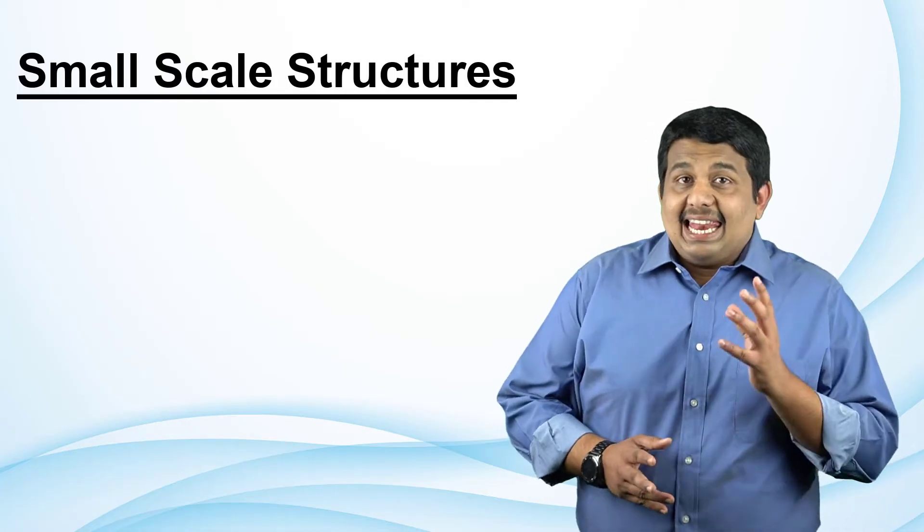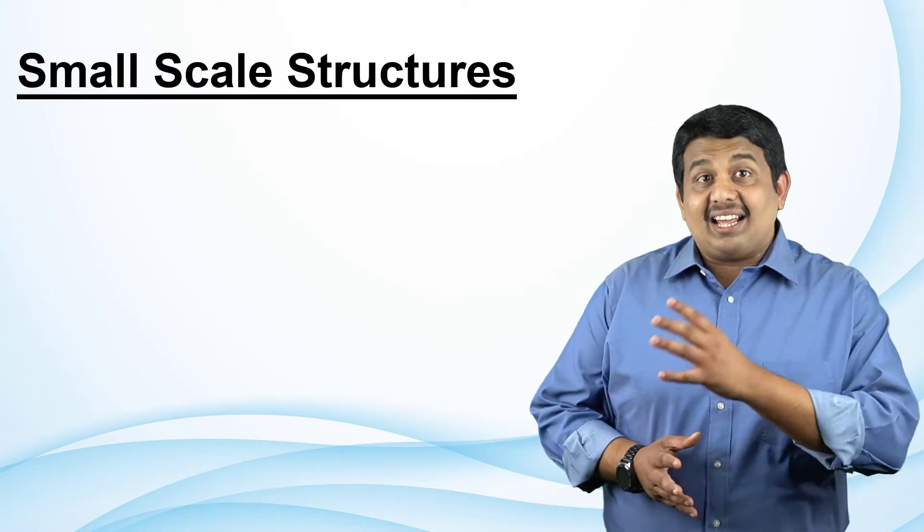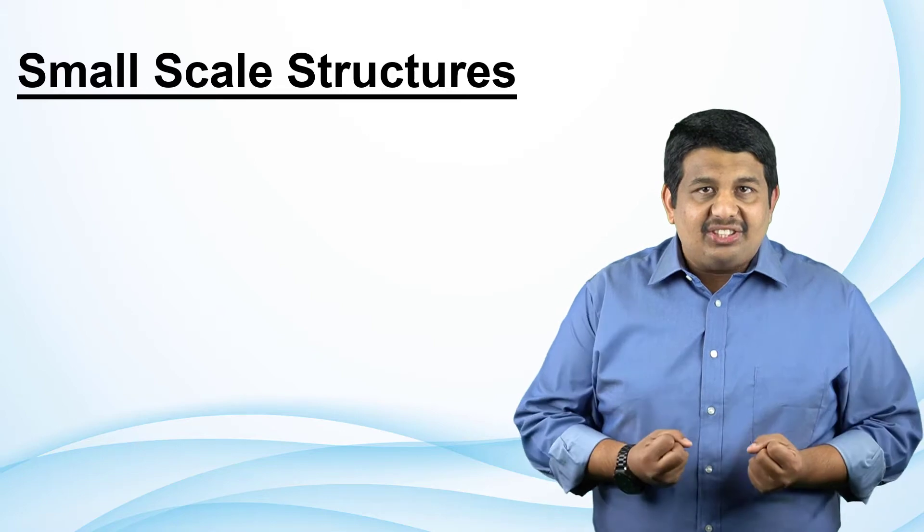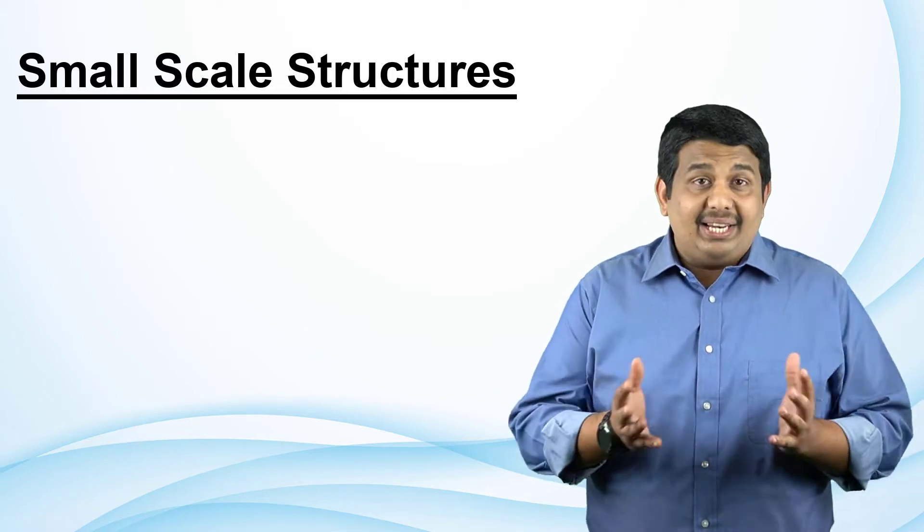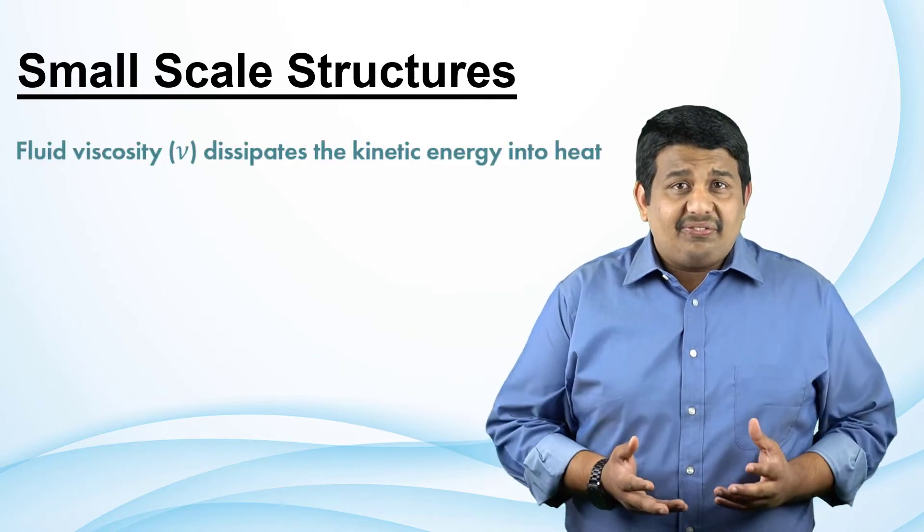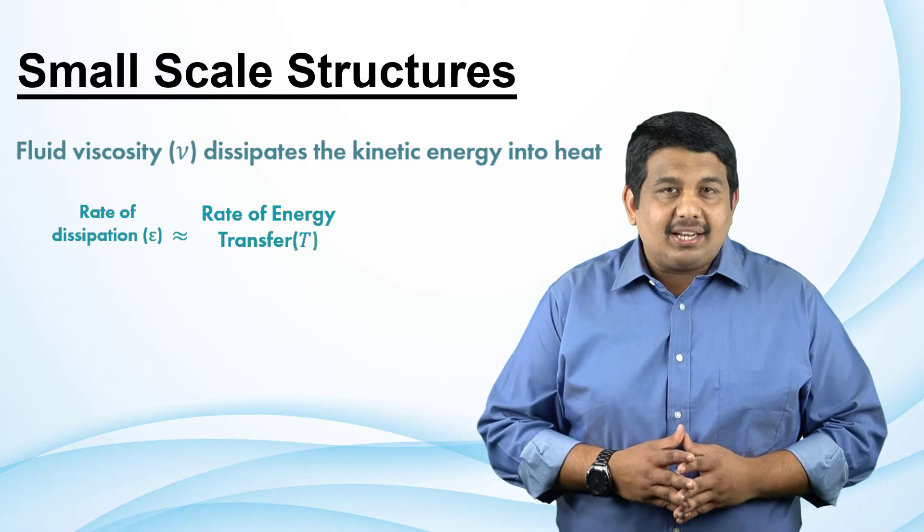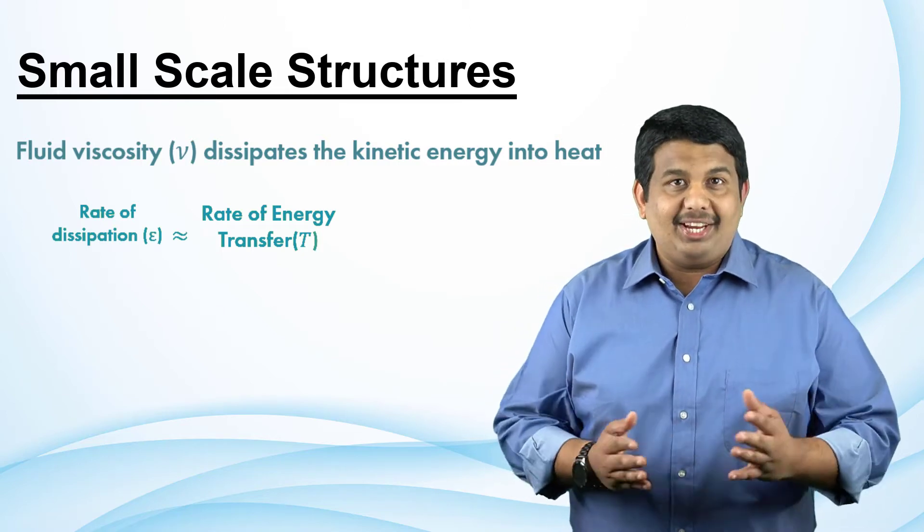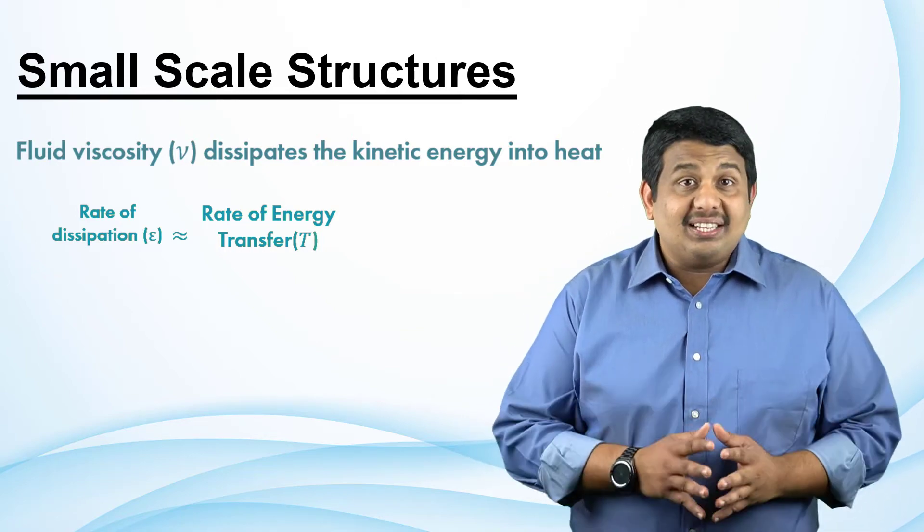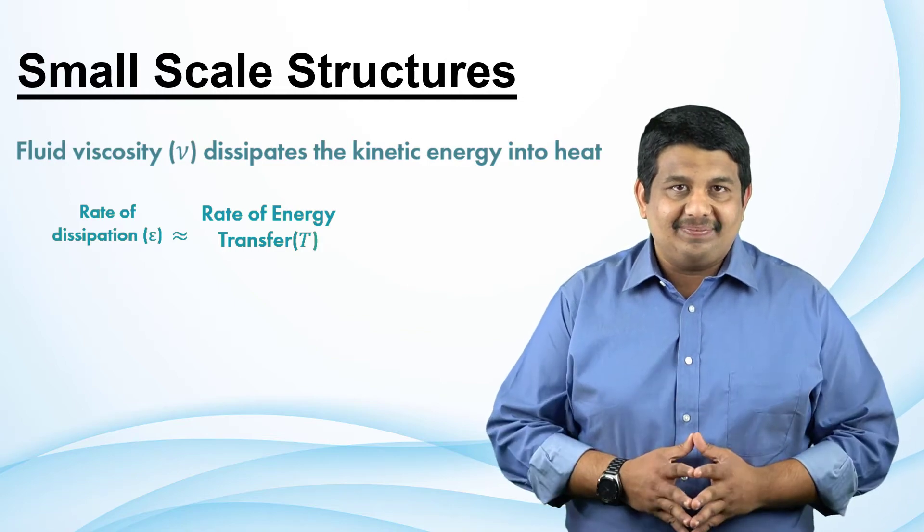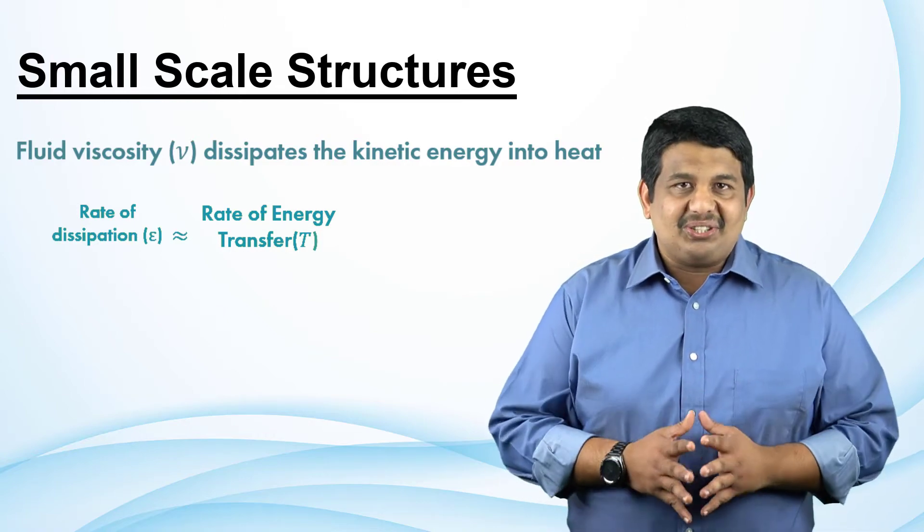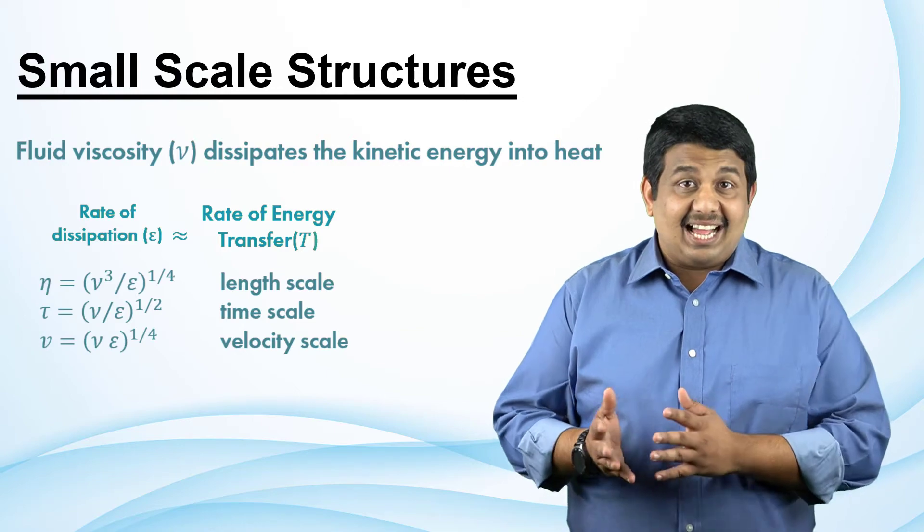Before we do so, let us identify the key mechanisms that affect the small scale features. We know that these small scales take energy from the large scales, which eventually is dissipated by viscosity. Therefore, it is fair to say that the total amount of energy transfer must be equal to the dissipation rate. Using these two variables, it is possible to construct the different dynamic scales of motion, that is, length, time, and velocity, for the smallest structures of the flow. These relations are shown here.